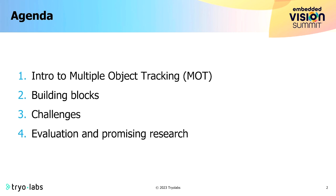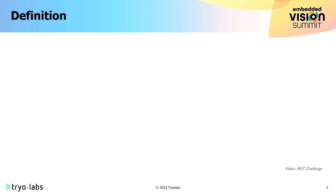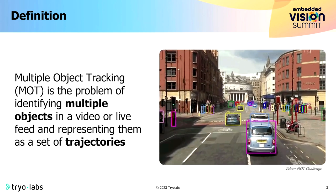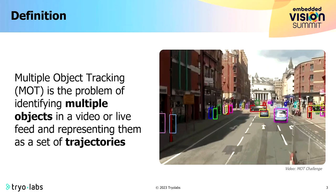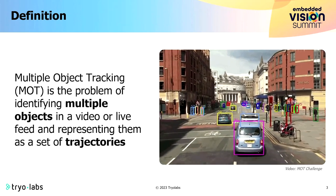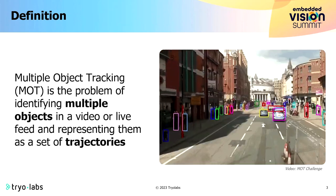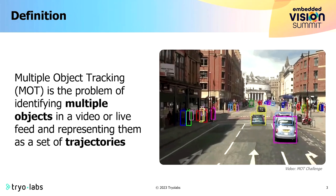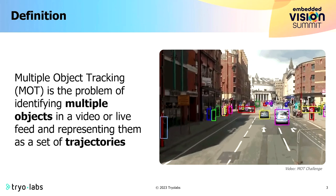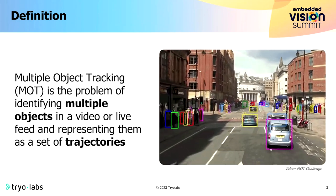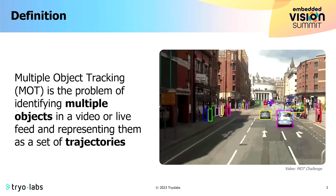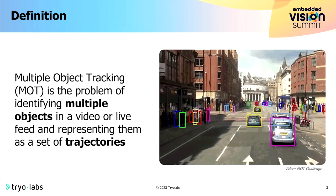So what is multiple object tracking? We have a single camera, and the idea is that I want to identify multiple objects in the frame and track their trajectory. When I say identify, I mean when the object first appears I want to assign it an ID — so maybe this little car here is ID 30 — and I want to maintain this ID throughout the video.